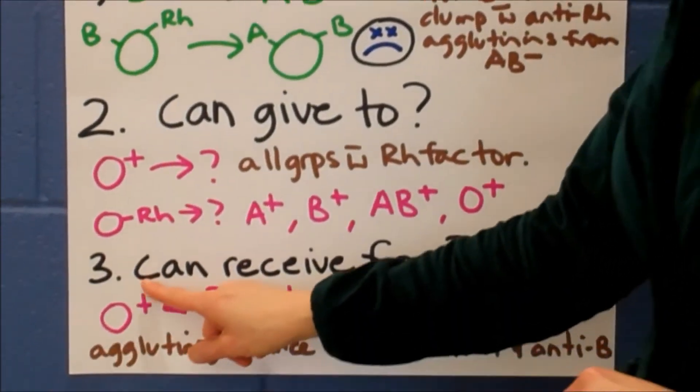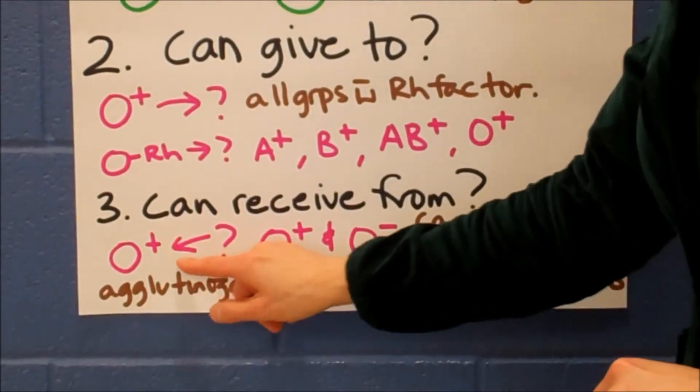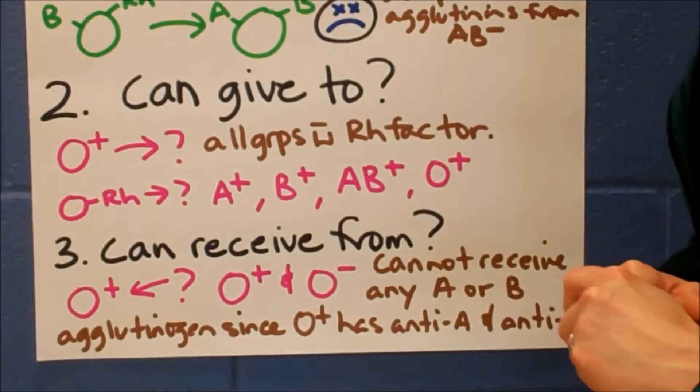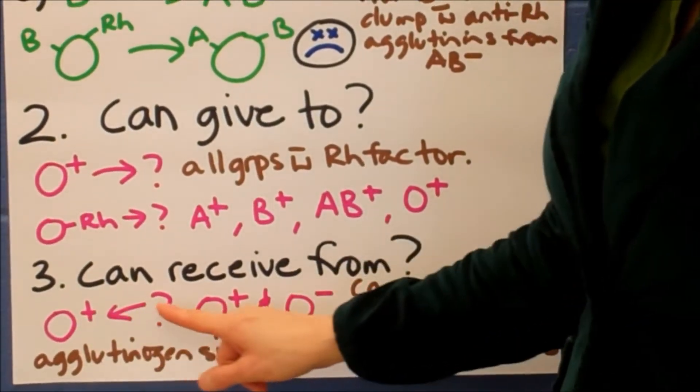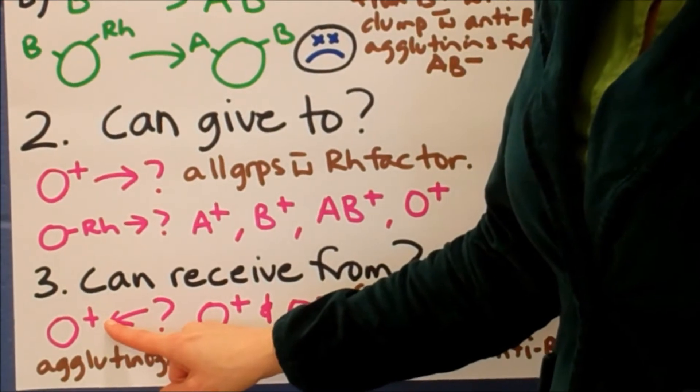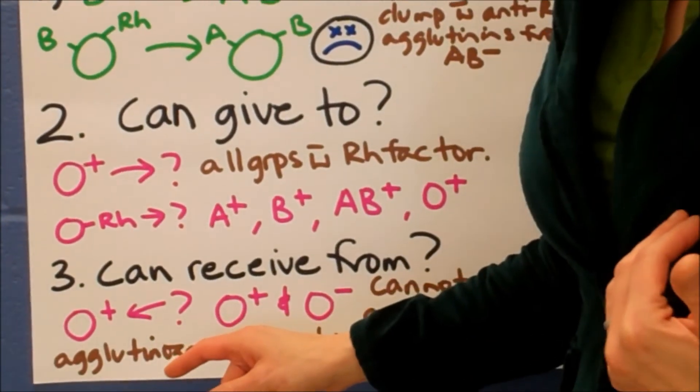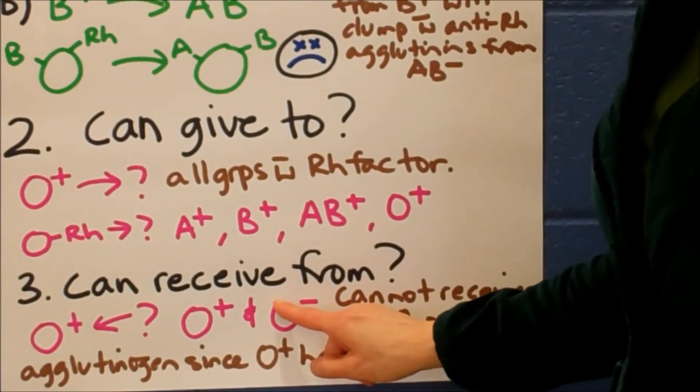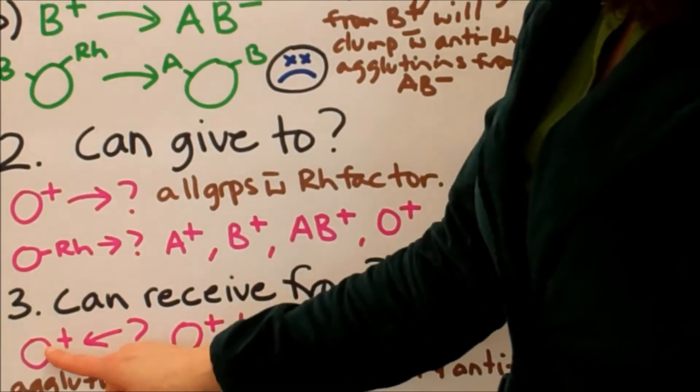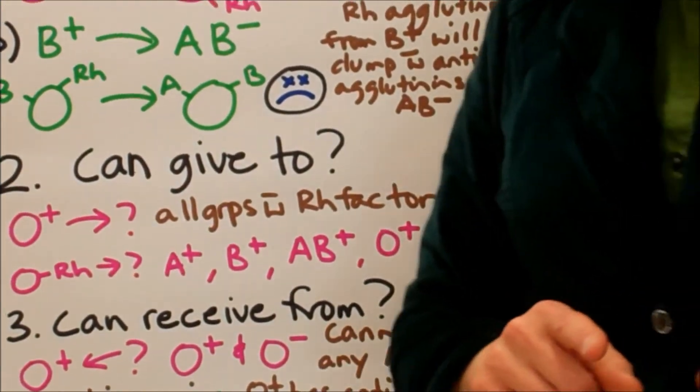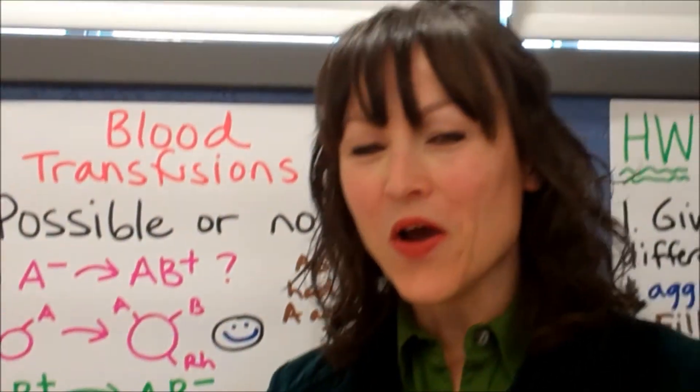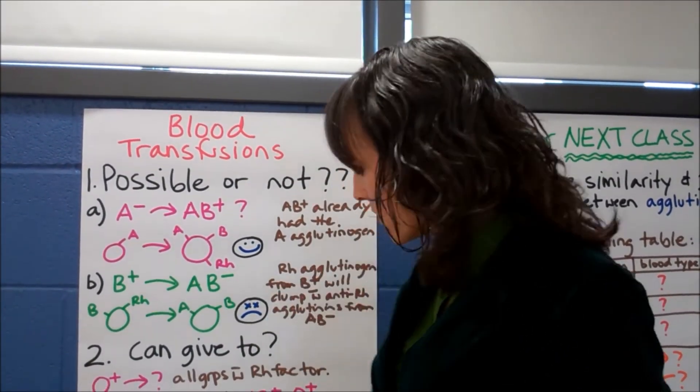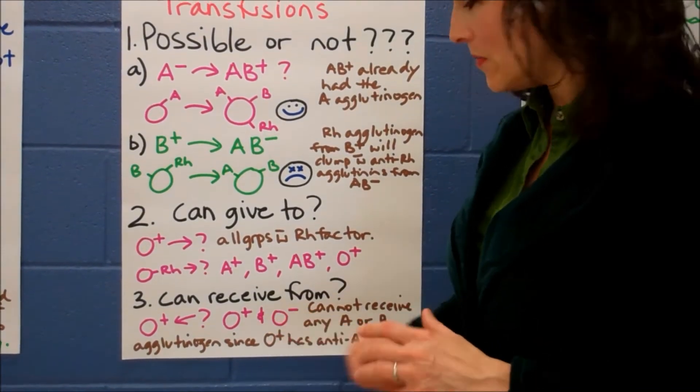Number three. Can receive from. O plus can receive from whom? Once again, you can pause the video and see if you can get the answer on your own. Now AB plus can always receive from itself. You can always give to yourself or receive your own blood type. That's a given. It can also receive from O minus. So the answer to this one is O positive can receive from O positive and O negative. Remember, O negative is the universal donor. He can give to anybody.